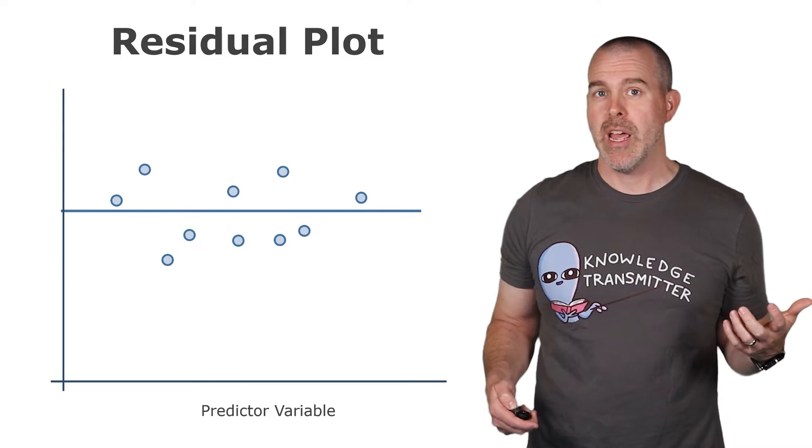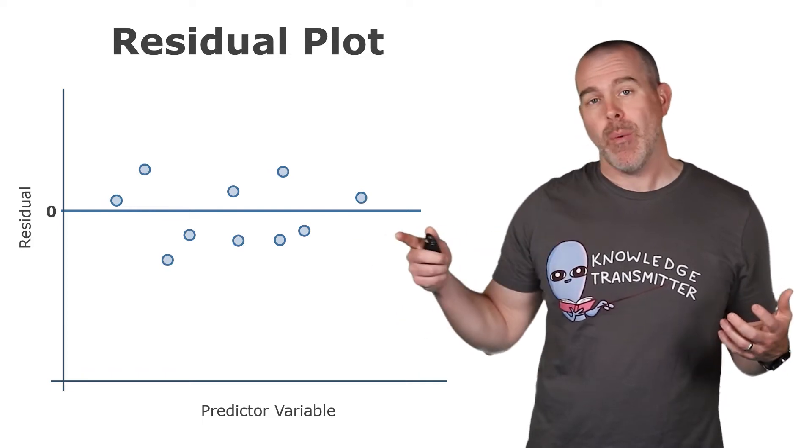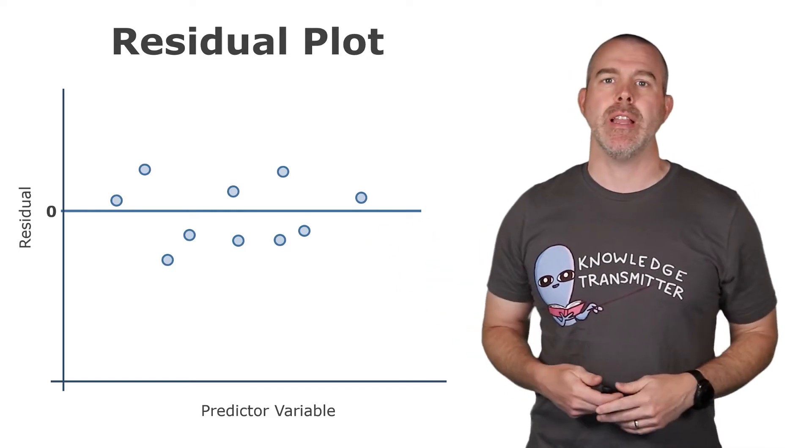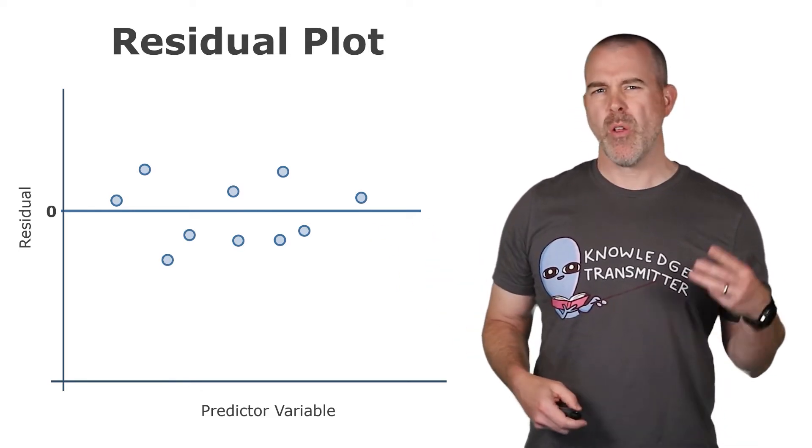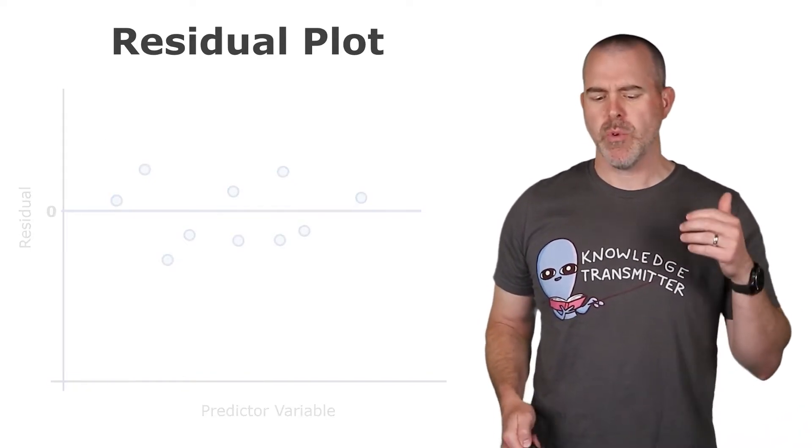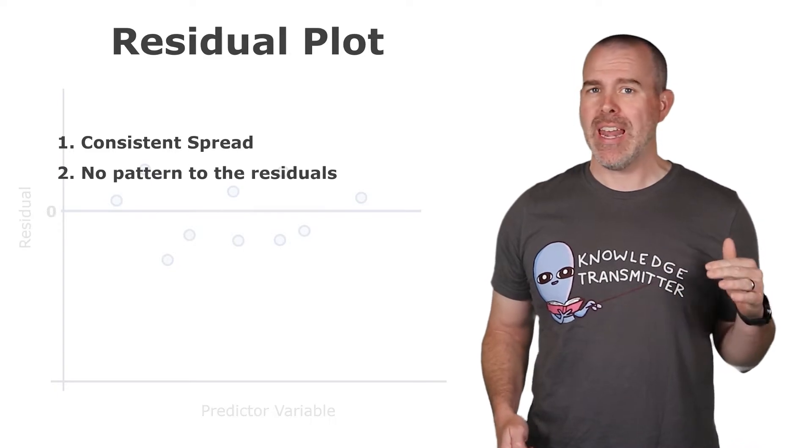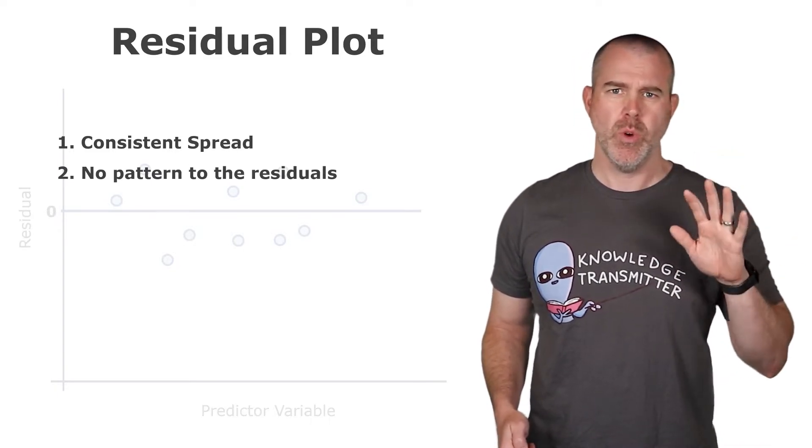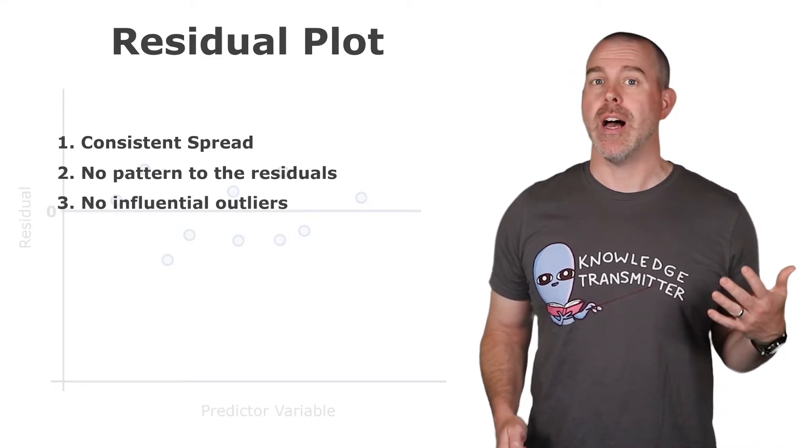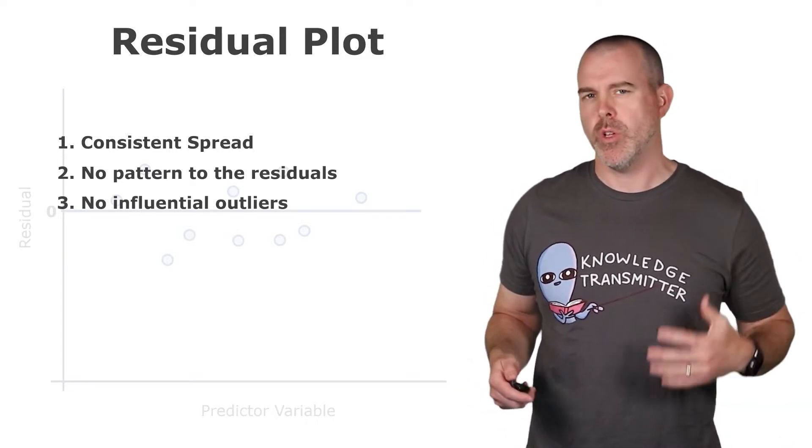This is called a residual plot where the y-axis is the residuals. The middle of the y-axis is zero. Some points are above the line, some are below. There are three particular things we're going to want to look for on the residual plot. First is we want to have a consistent spread all the way across. Second is we can't have any kind of pattern to the residuals. And thirdly, we can't have any influential outliers.